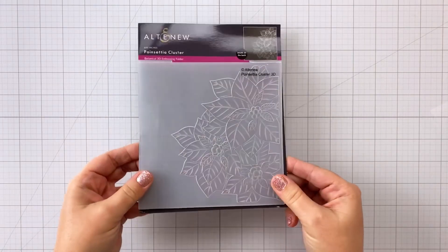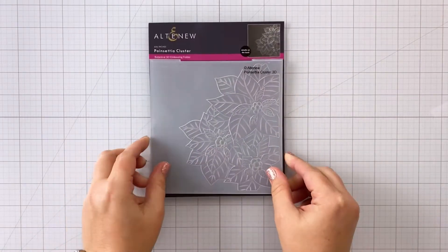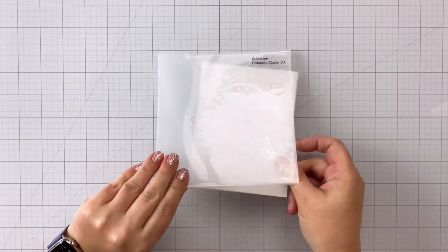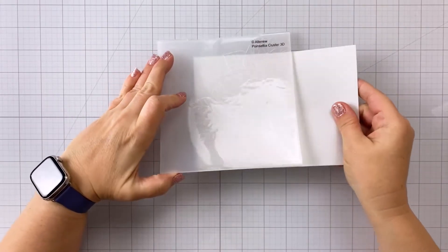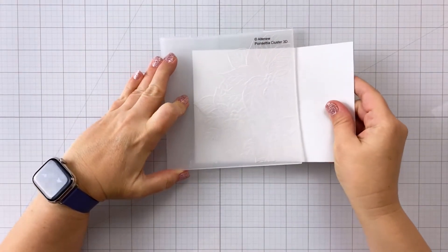So I'm starting out here with the Poinsettia Cluster 3D Embossing Folder and I'm going to emboss a 4¼ by 5½ inch panel as well as a sheet of Gina K Designs masking paper.